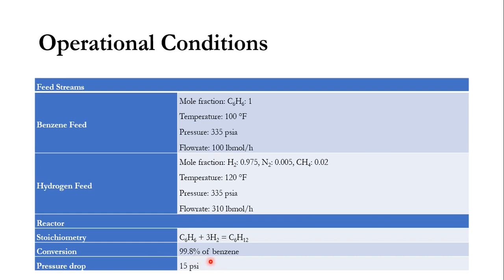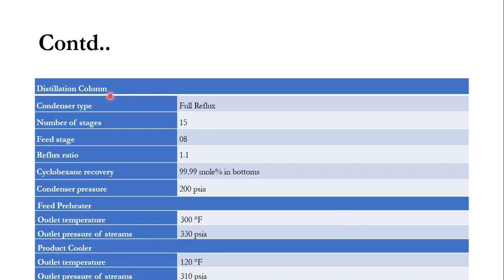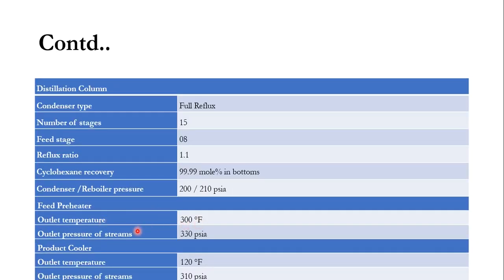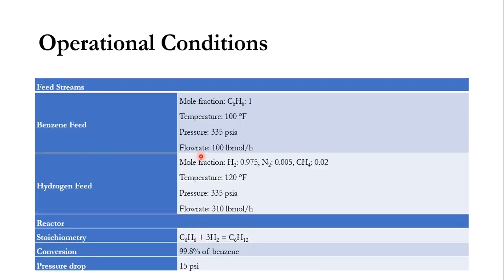Specifying the pressure drop in the reactor is a new topic we will study for the first time. In the distillation column, the condenser type is full reflux, there are 15 stages with feed at stage 8, reflux ratio is 1.1, cyclohexane recovery in the bottom is 99.99 mol%, condenser pressure is 200 PSIA, and reboiler pressure is 210 PSIA. The feed preheater outlet temperature is 300°F and outlet pressure is 330 PSIA. The product cooler outlet temperature is 120°F.